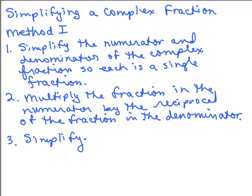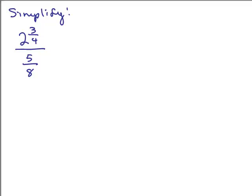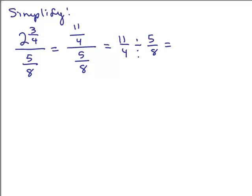Let's look at an example with numbers: 2 and 3/4 over 5/8. I would write the numerator as a single fraction: 4 times 2 is 8 plus 3, giving 11/4. So now I have 11/4 divided by 5/8. I can write that out as a division problem first, and then remember that when you divide by a fraction, it's the same thing as multiplying by the reciprocal.